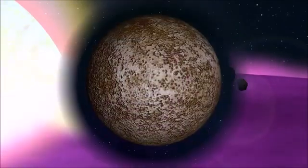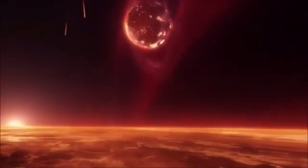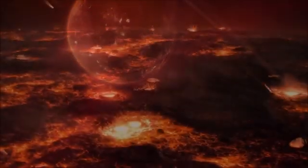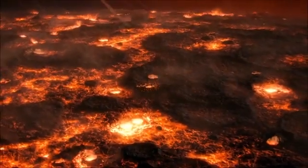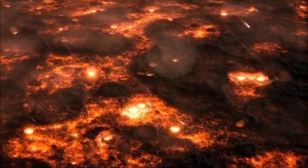As a planetesimal grew larger, its gravitational pull increased. It became more tightly held together and drew in rocks from its immediate surroundings with greater force, leading to a period of intense bombardment and growth. Earth and the three other rocky planets of the inner solar system were formed in this way about 4.56 billion years ago.